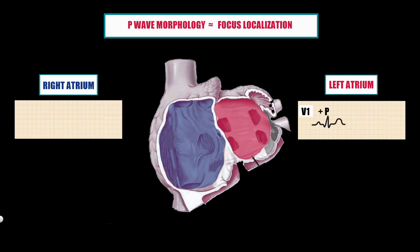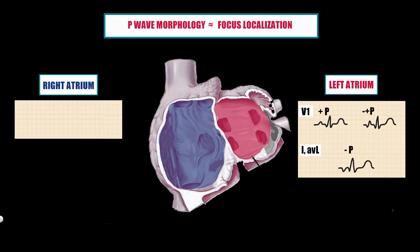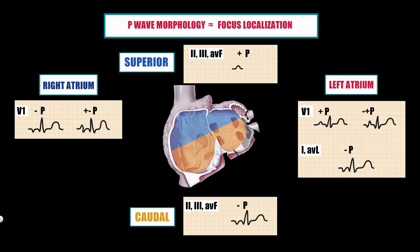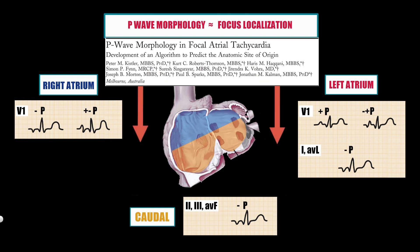A positive or biphasic P-wave in V1 indicates left atrium origin. A negative P-wave in lead I and AVL also suggests left atrium origin. A negative or biphasic P-wave in V1 indicates right atrium origin. A negative P-wave in the inferior leads — II, III, and AVF — suggests a caudal origin, whereas a positive P-wave in those leads favors a superior location. For more detail on P-wave morphology evaluation in focal atrial tachycardia, check the article in the description.